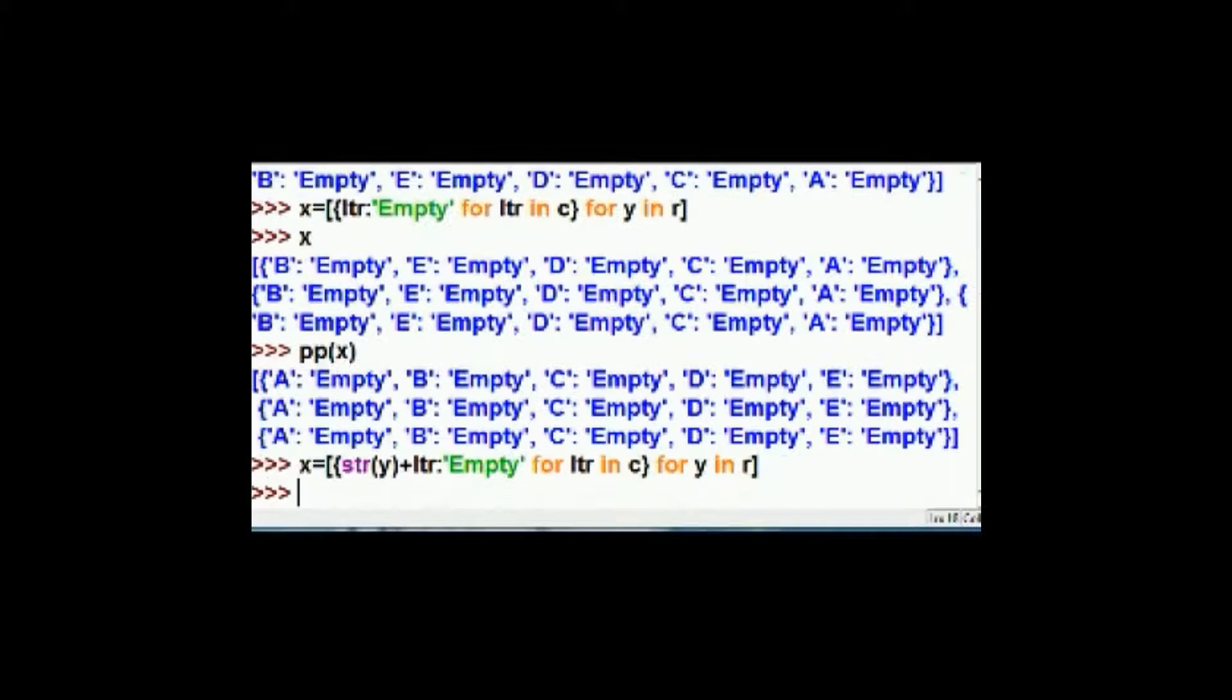I'm going to make this say give me show me the string of Y. Concatenate that with letter, colon, empty. So to show me row plus letter, colon, empty. For each letter in the chair pairs. And then for each Y in the row. Okay. That's done.